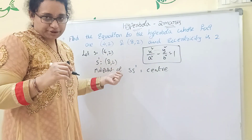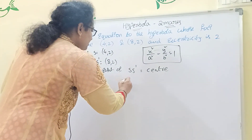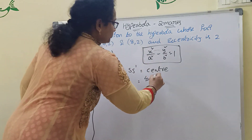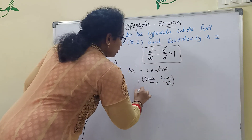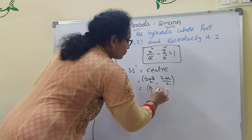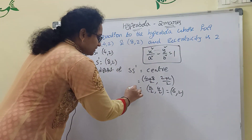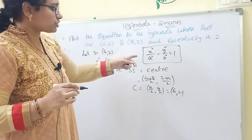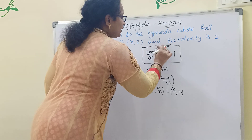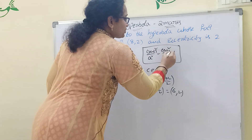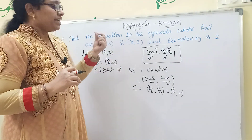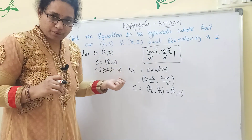The midpoint formula is (x1 + x2)/2 comma (y1 + y2)/2. So midpoint of S and S' equals (4 + 8)/2 comma (2 + 2)/2, which equals 12/2 comma 4/2, that is 6 comma 2. So the center h comma k is (6, 2). Since the hyperbola is not passing through the origin, we use (x − h)² and (y − k)² form.